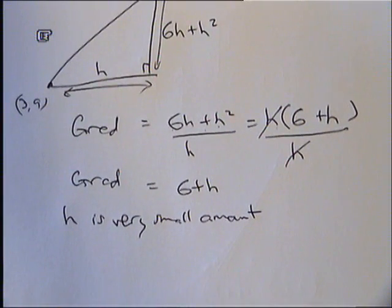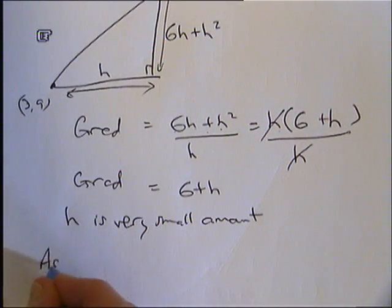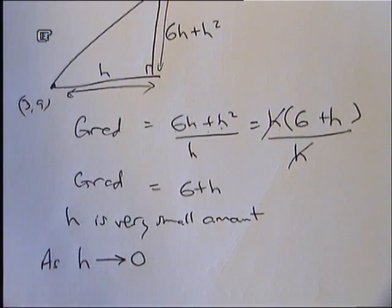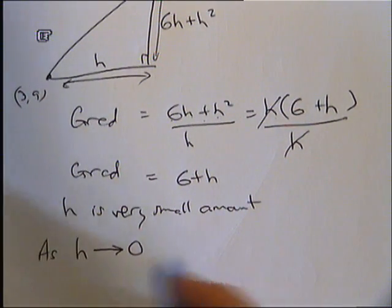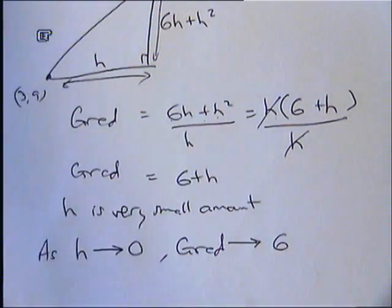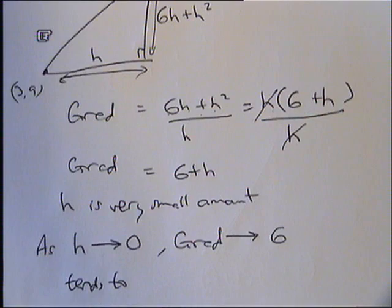So what will actually happen as h gets smaller and smaller? What will happen to the gradient? It'll get closer and closer to 6, yeah. And we write that down like this. As h tends to 0, that's an arrow, but you read that out. As h tends to 0, the gradient tends to 6. So as I'm making h very, very small, as it approaches 0, we read that out as h tends to 0, the gradient tends to 6.